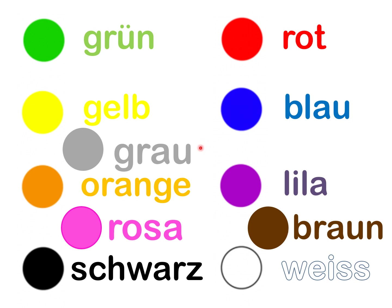Let's say these all together — repeat after me. Grün. Gelb. Grau. Orange. Rosa. Schwarz. Rot. Blau. Lila. Braun. Weiß. Very good. Yes, we learned all our colors — that was a lot of fun.